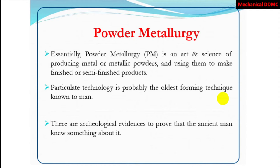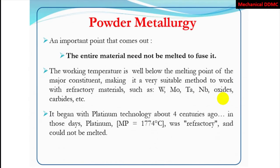Powder metallurgy is a relatively new concept in this scenario, but the terms used in powder metallurgy and the underlying thinking come from the past — even ancient man knew something about it. An important point in powder metallurgy is that the entire metal need not be melted to fuse it. In powder metallurgy, we are not melting the metal completely to convert its shape; we are using it below the melting point of that metal. This is a most important characteristic of powder metallurgy.